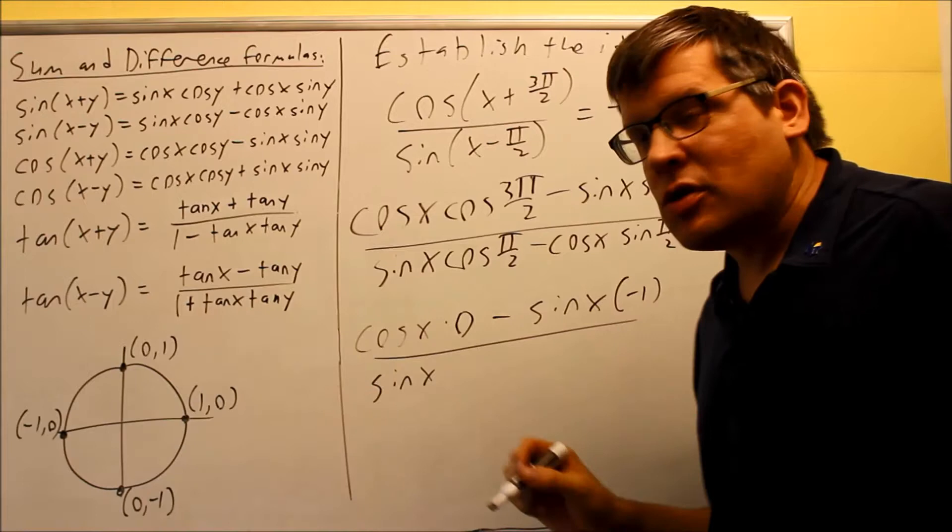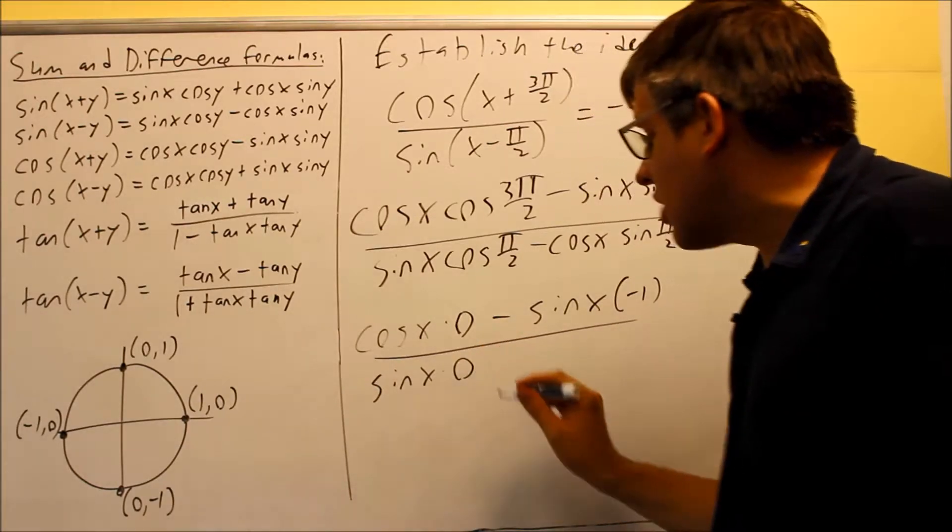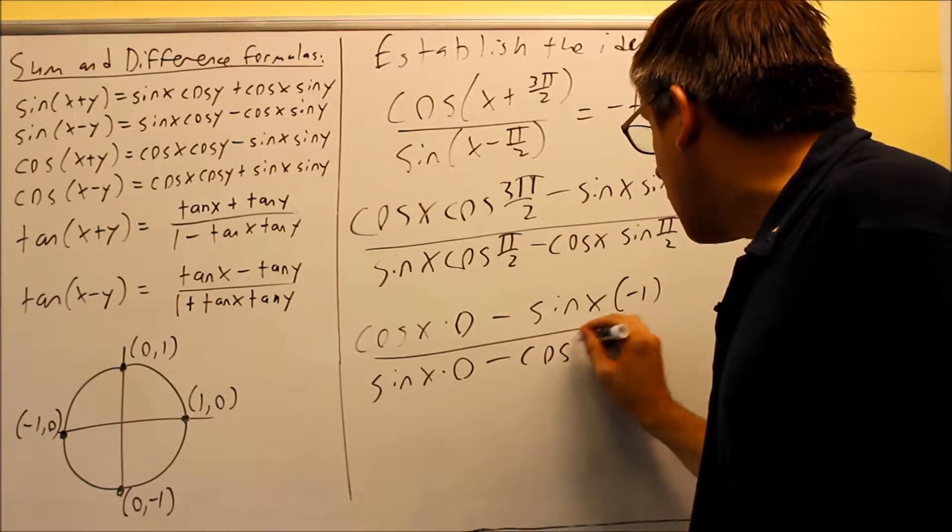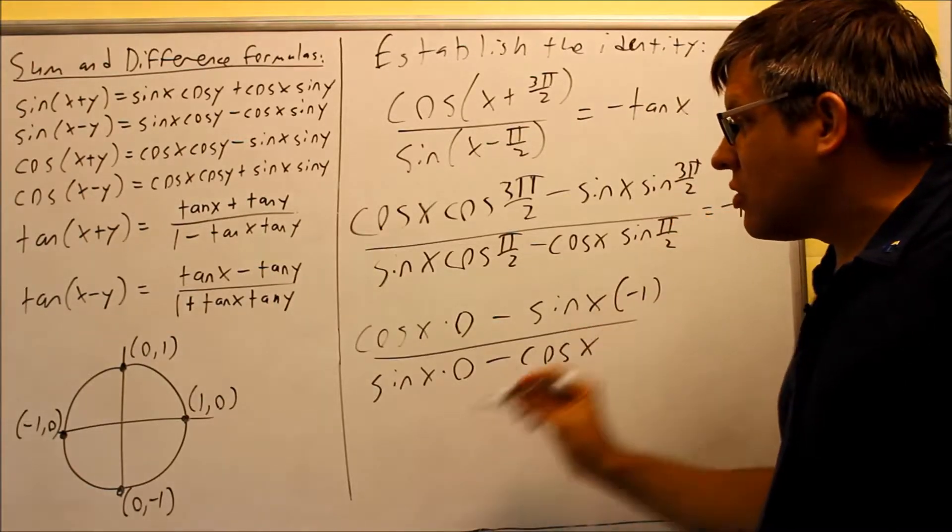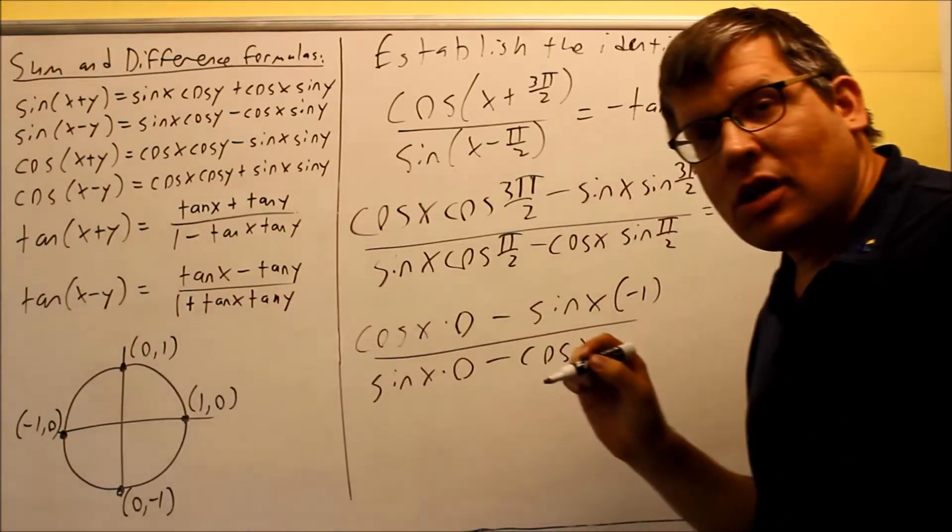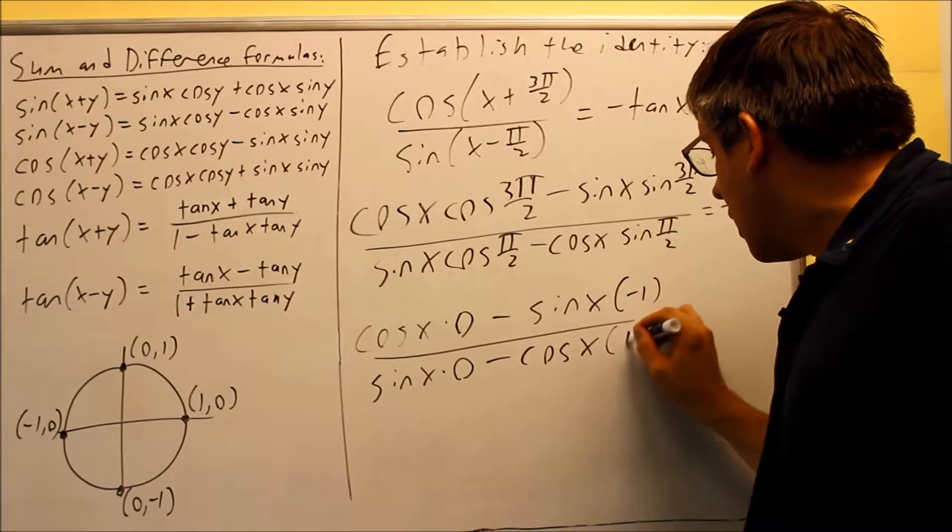Cosine is the x value. That's going to be 0 in this case. So we have sine times 0. And then I have minus cosine x. Sine π over 2, that would be the y value at 90 degrees. That's going to be positive 1.